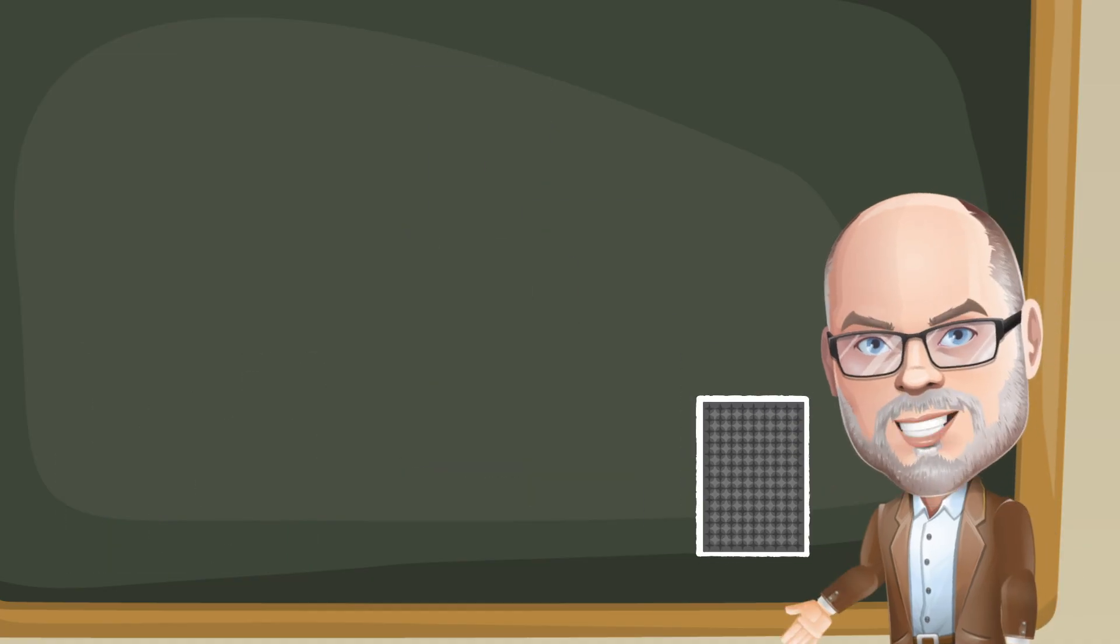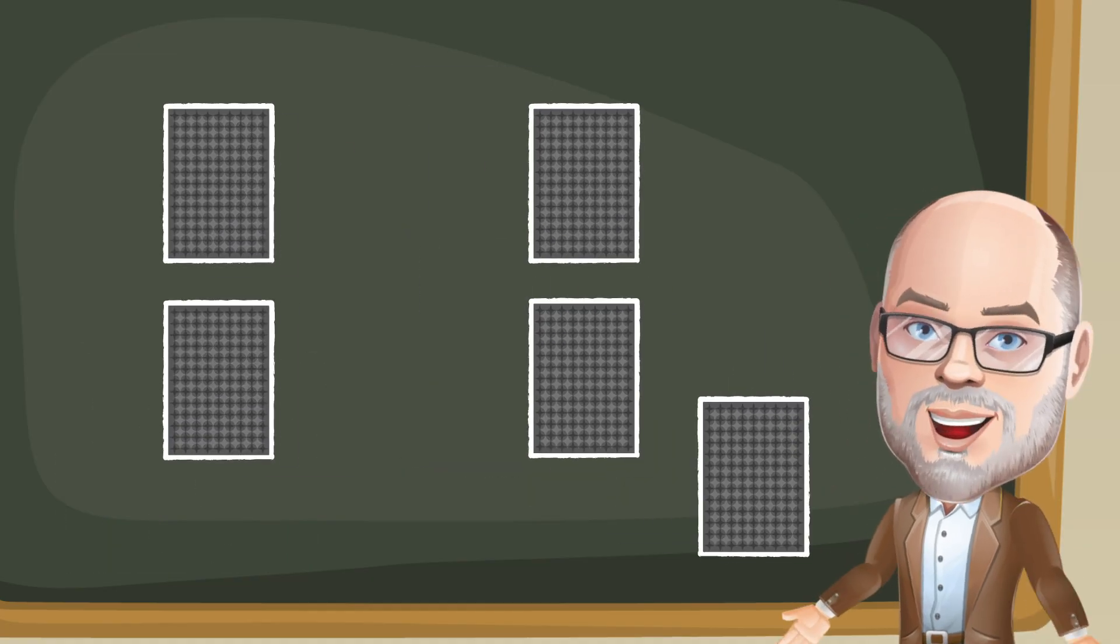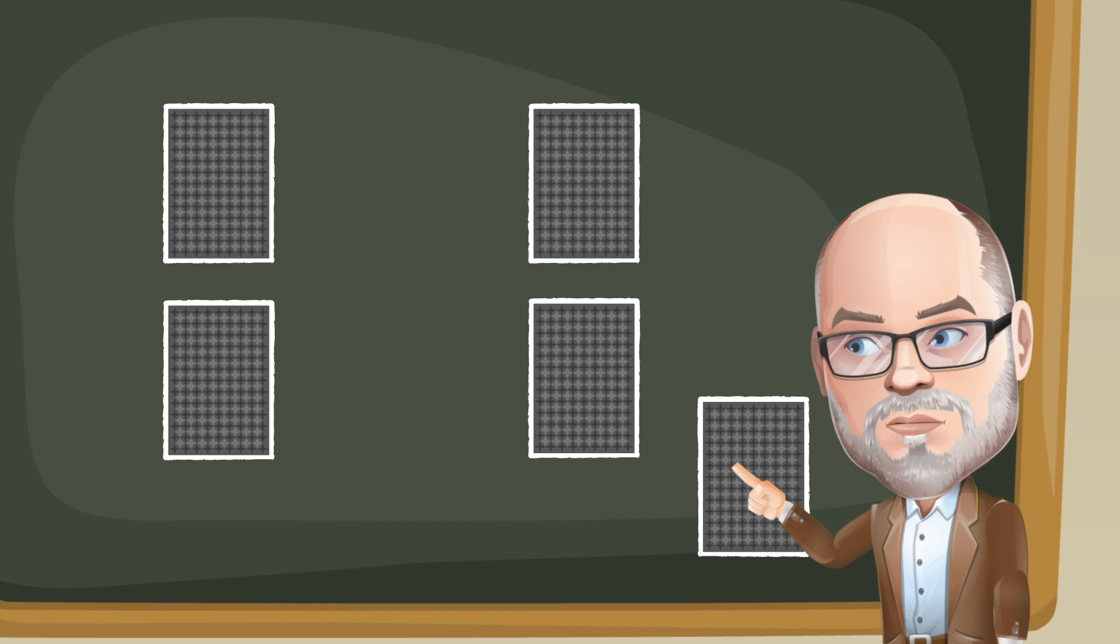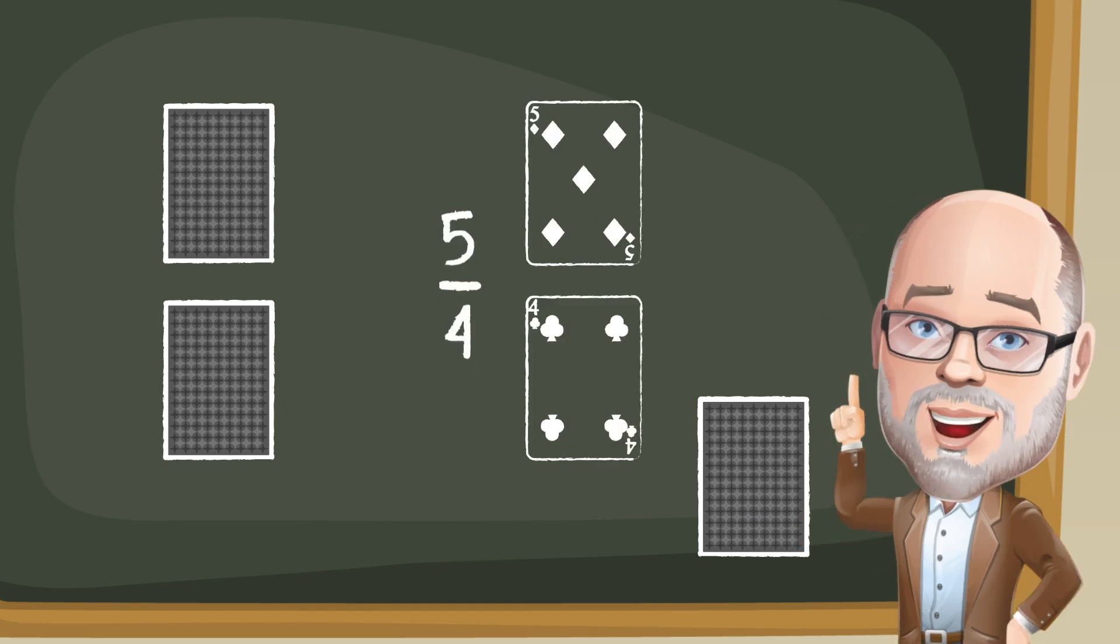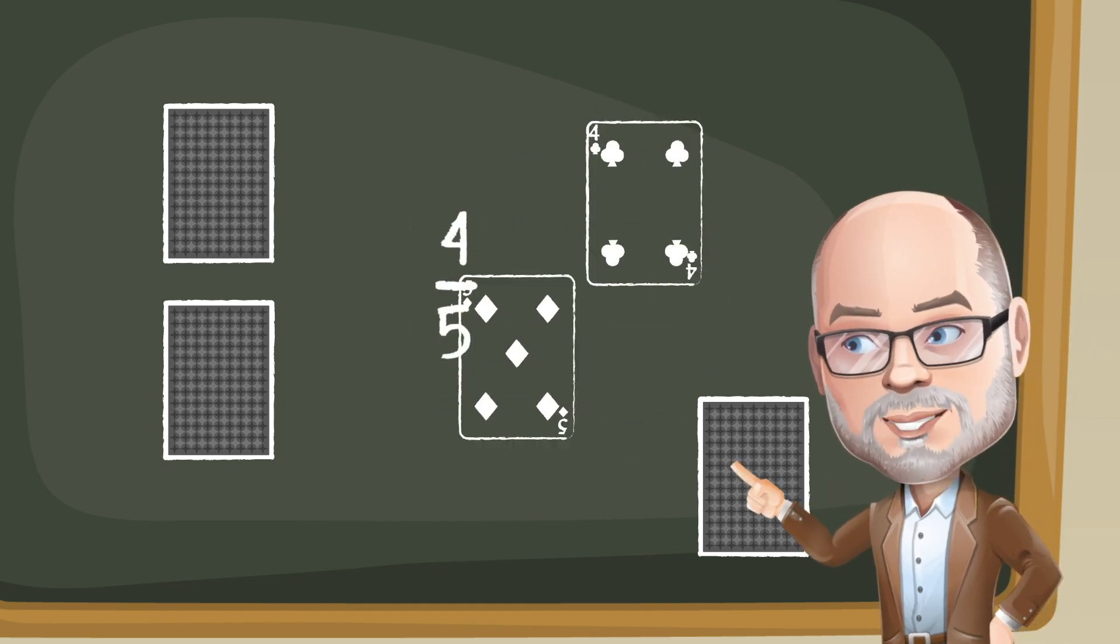Each player flips over two cards and uses them to make a fraction less than one. For example, a player might flip a five and a four. They can't make five fourths. They must make four fifths.